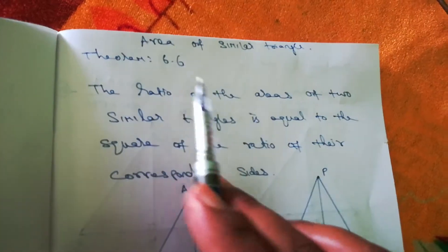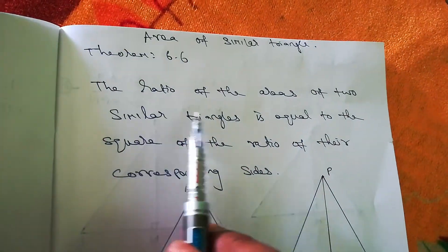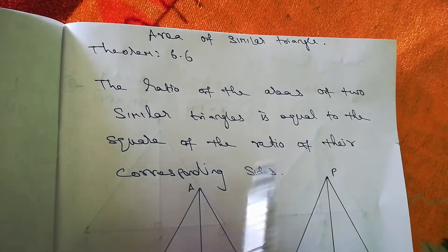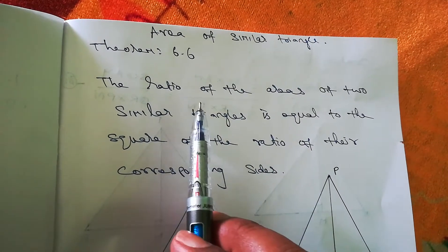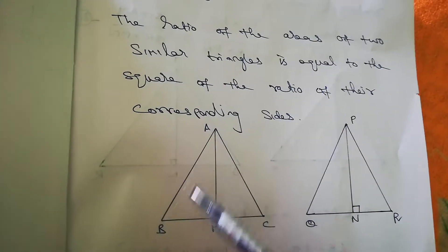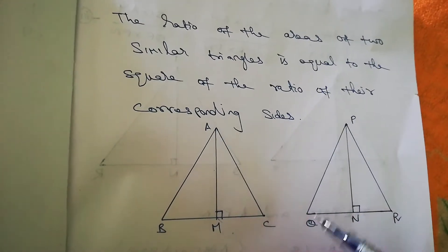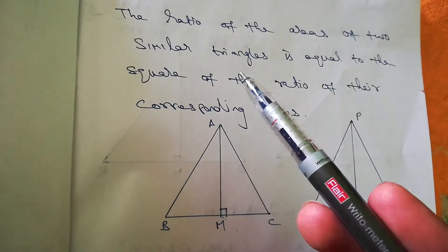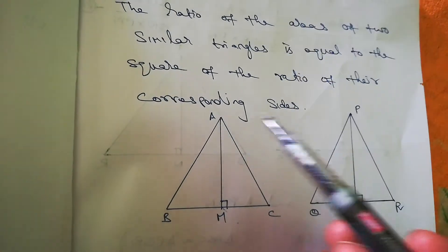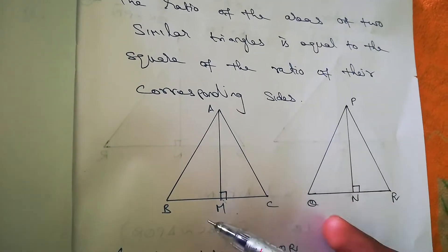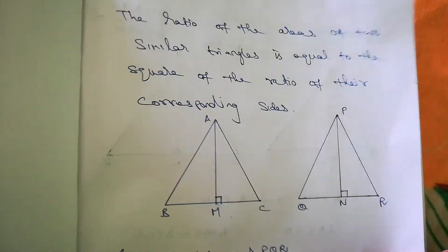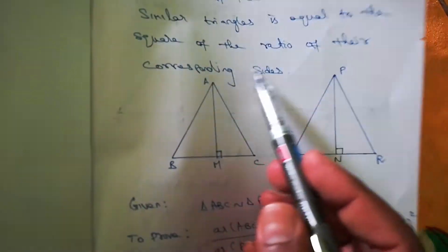Theorem 6.6: Area of Similar Triangles. The ratio of the areas of two similar triangles is equal to the square of the ratio of their corresponding sides. Two similar triangles, triangle ABC and triangle PQR, are given. The corresponding sides are AB/PQ, BC/QR, and AC/PR.